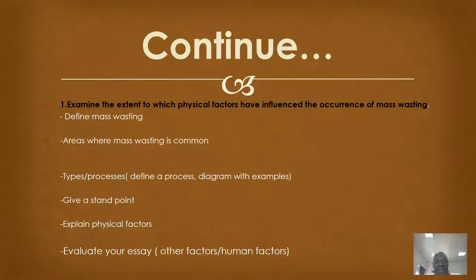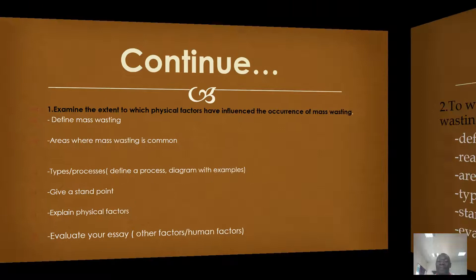And many other causes. Dear students, those were the causes. I have provided some practice questions for you to try. For example: examine the extent to which physical factors have influenced the occurrence of mass wasting in East Africa. A student would be expected to define mass wasting, give areas where it is common, describe the processes using diagrams and examples, and give a standpoint — for example, to the greater extent, physical factors have influenced mass wasting. Then evaluate by looking at other factors, mainly human factors.